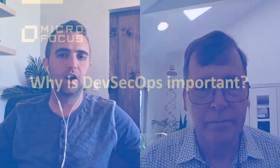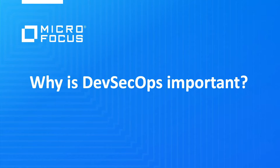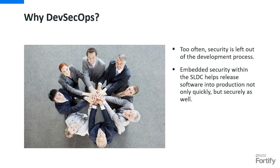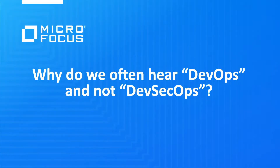And why is DevSecOps important? What are the problems of bolting security on later in the development lifecycle, and why does it need to be integrated? Well, if you think about DevOps, part of its purpose is to increase the velocity of getting software out into production. The faster you release software, the faster vulnerabilities can be released as well. Without security built in, DevOps can rapidly increase the application layer attack surface that an organization has.